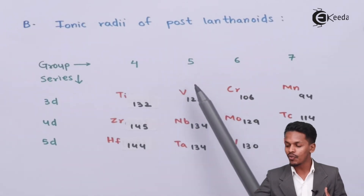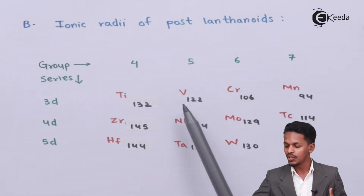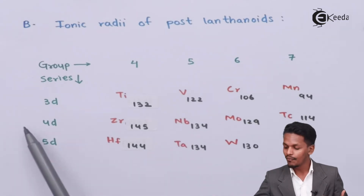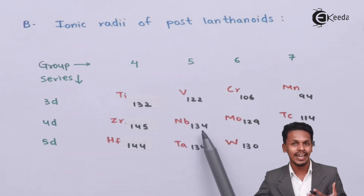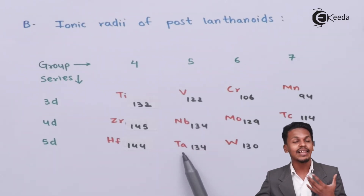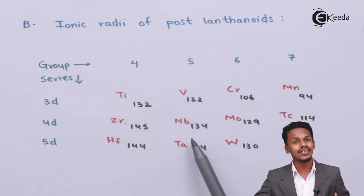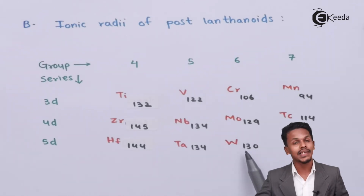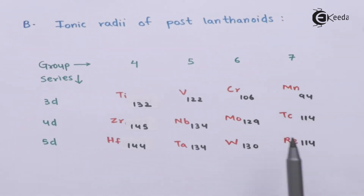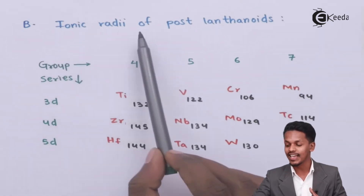Similarly, for group 5: vanadium belongs to the 3D series, niobium to the 4D series — their atomic sizes are 122 pm and 134 pm respectively. But tantalum, the 5D element, also has an atomic size of 134 pm, the same as niobium. This pattern also applies to molybdenum and tungsten. This is the effect of lanthanide contraction on the ionic size of post-lanthanides.